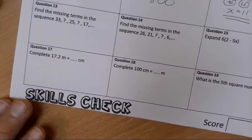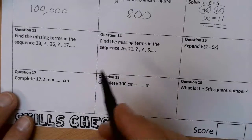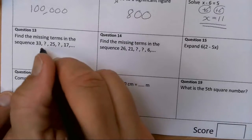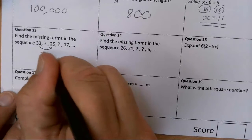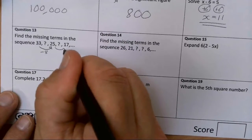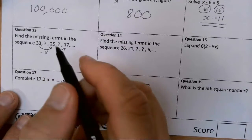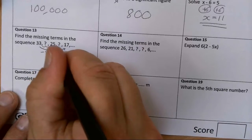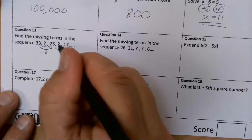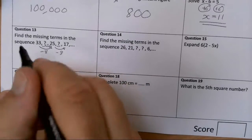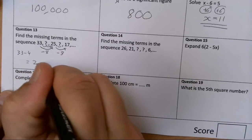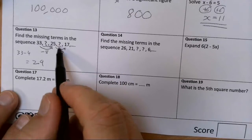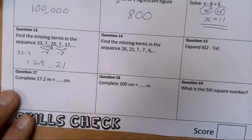Question 13, find the missing terms. This is a bit of a tricky one. I see that it's going down 8, and then down 8. So it must be half of that distance in the middle, so each one of these is going to be down 4. So 33 take away 4 would be 29, then it goes 25, and then 25 take away 4 would be 21.